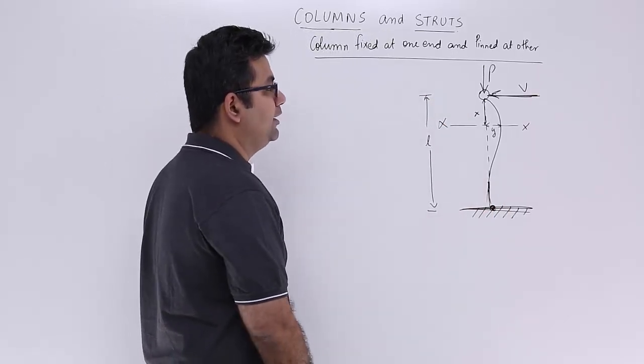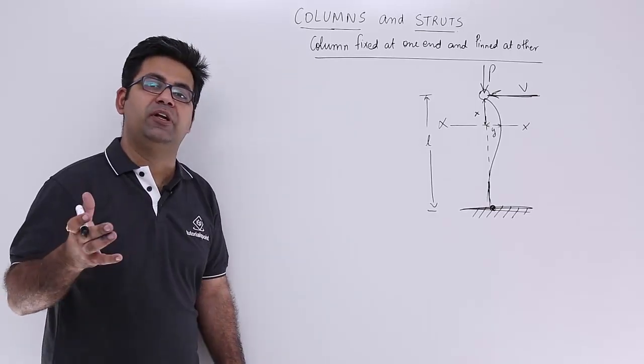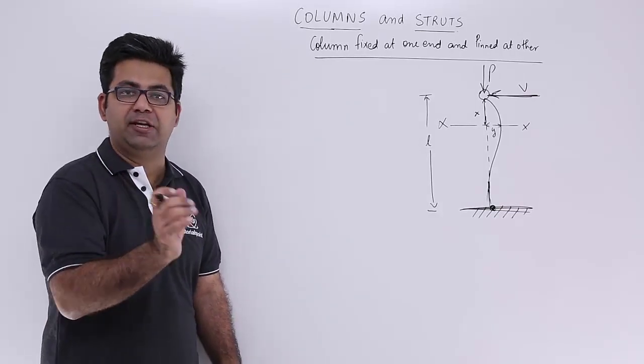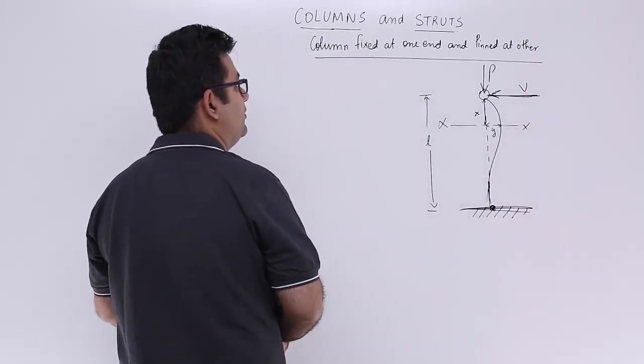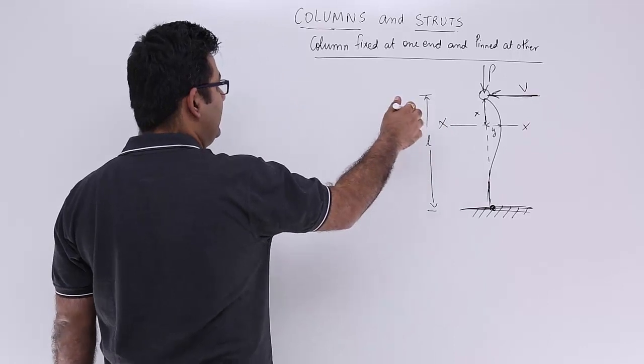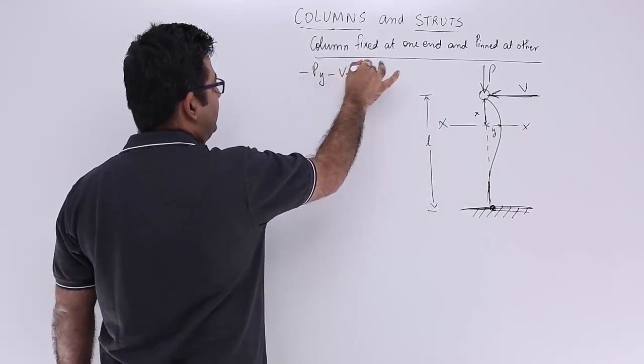So at the pin joint it has to be constrained for direction movement also. So you will have a horizontal force applied also. So the moment at this section then will become minus p into y minus vx.